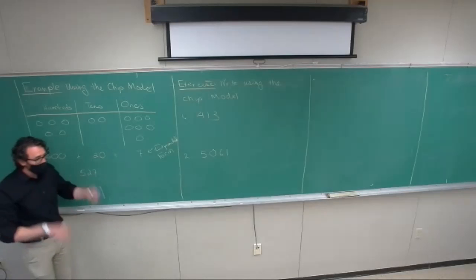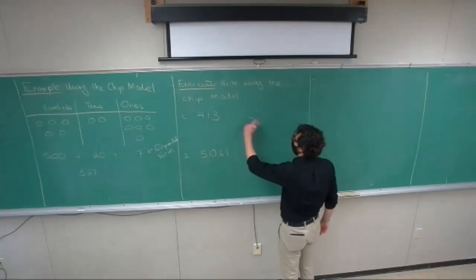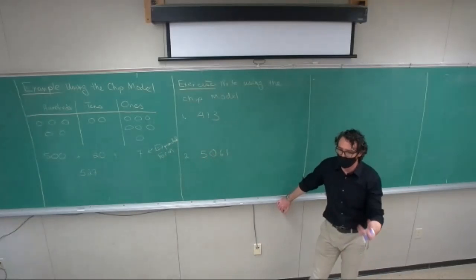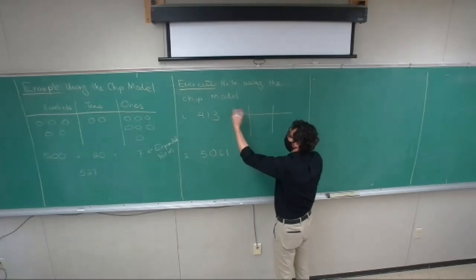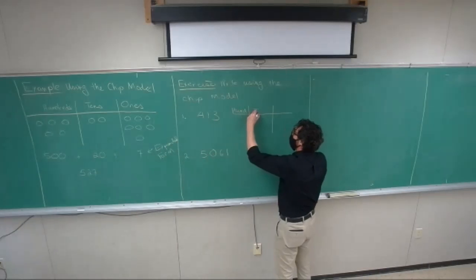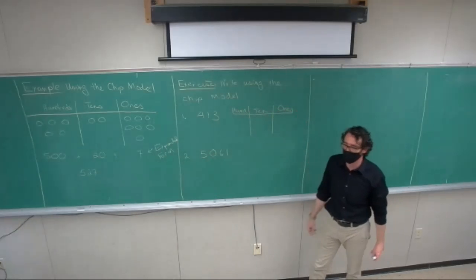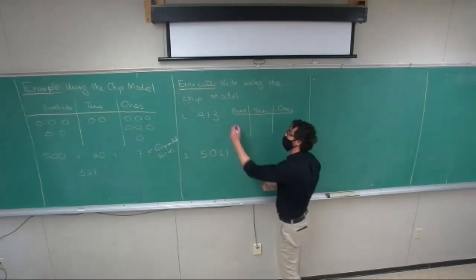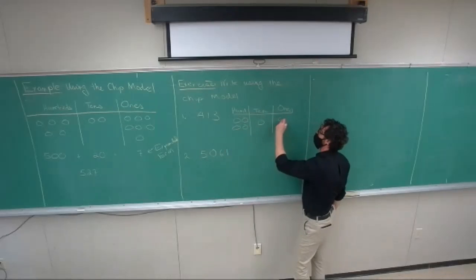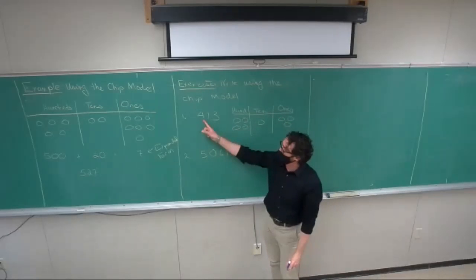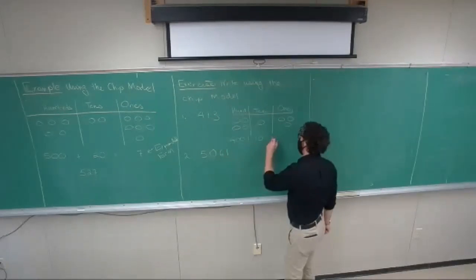This one isn't too bad. How many trays should I make? I need three trays — a tray for the hundreds, a tray for the tens, and a tray for the ones. How many circles? Four in the hundreds, one in the tens, three in the ones. So the expanded form of 413 looks like 400 plus 10 plus 3.